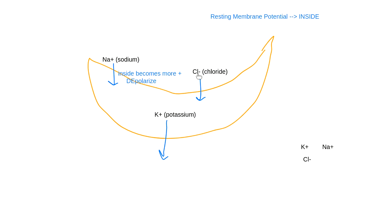Chloride has a negative charge — it's an anion. When I bring something with a negative charge into my cell, the inside becomes more negative. So chloride coming in hyperpolarizes the cell — it makes it extra negative. When sodium comes in, it depolarizes the cell, making it more positive. When chloride comes in, it hyperpolarizes the cell, making it more negative.